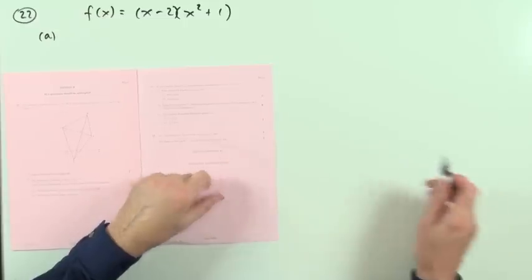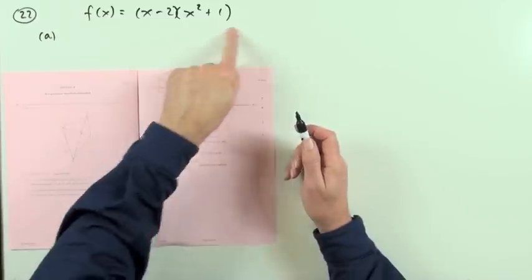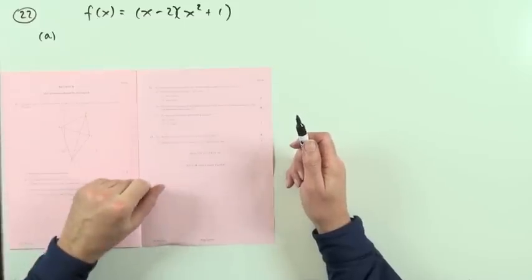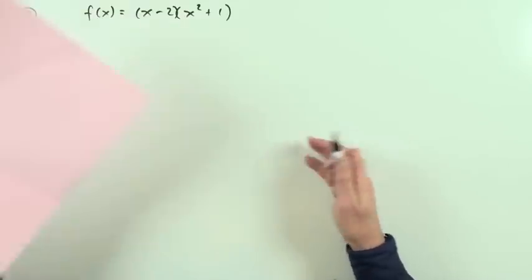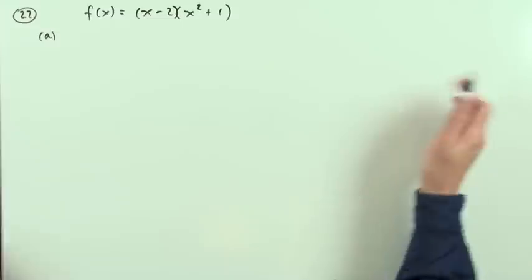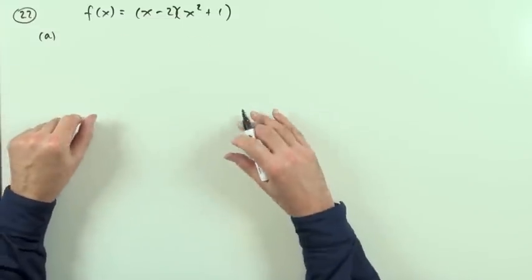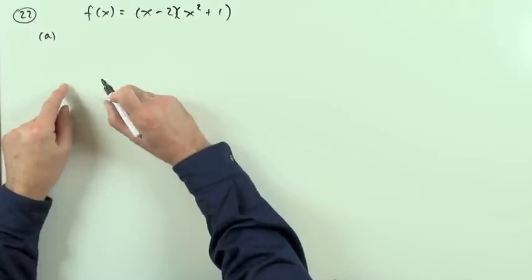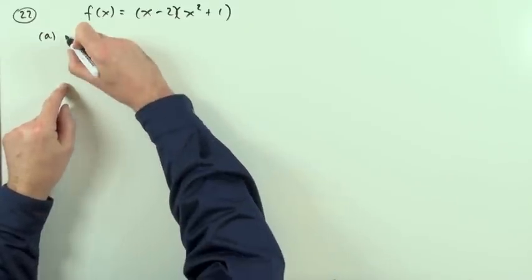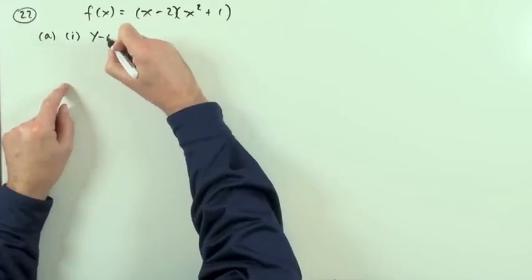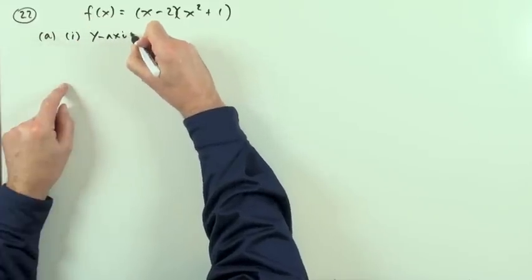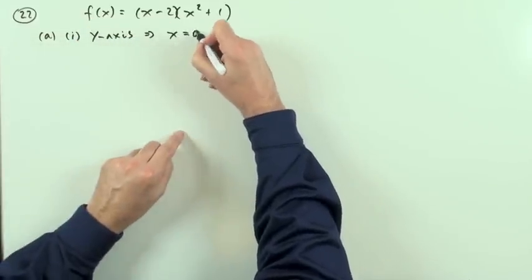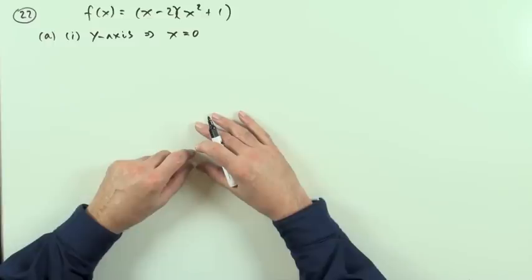Number 22. A function is defined by this formula. Find where the graph cuts the axes. It's just two marks — you could just state the points, but I'll put it down formally. First of all, where does it cut the y-axis? You're on the y-axis if your x-coordinate is zero.